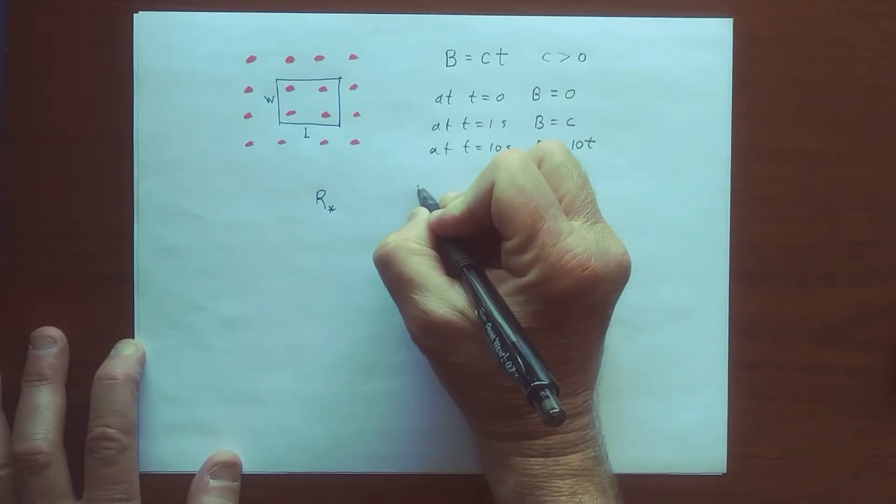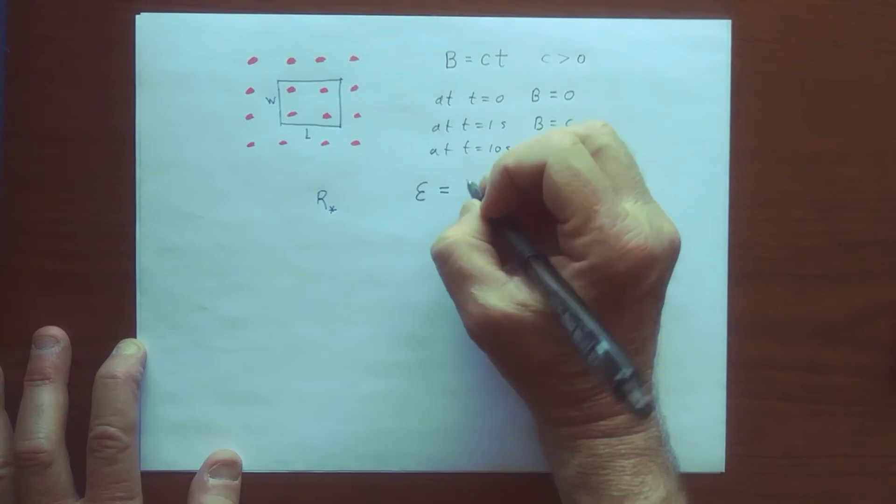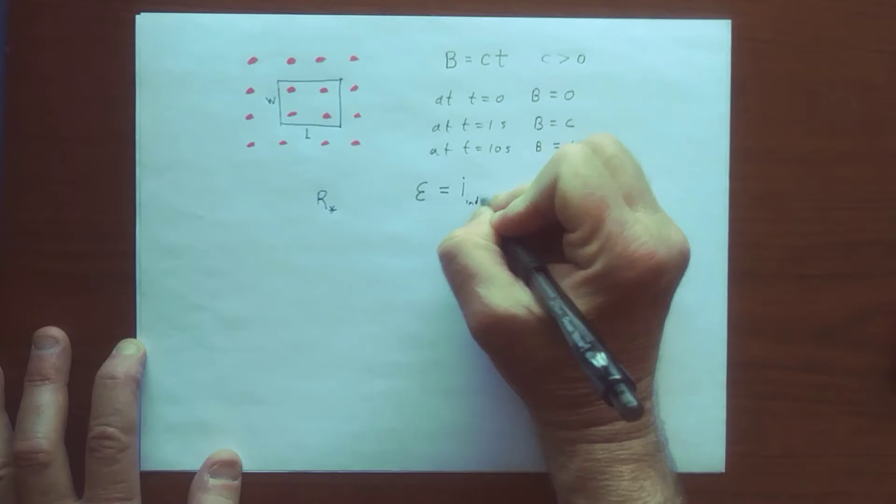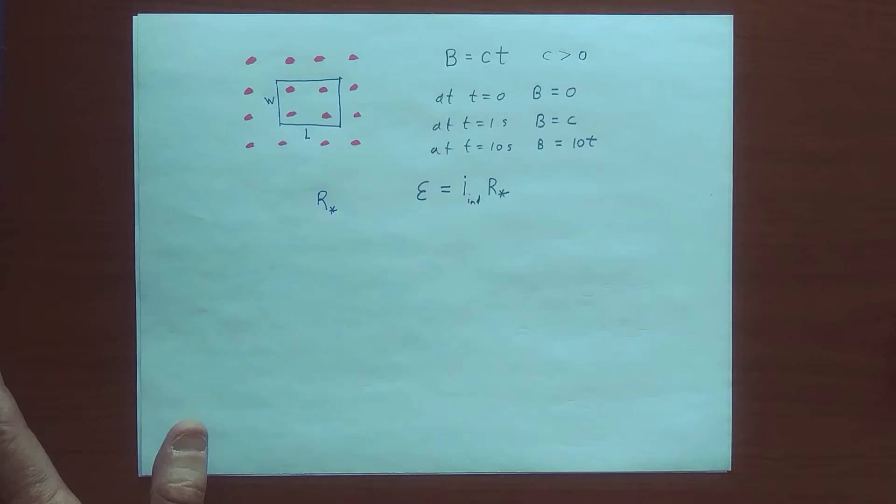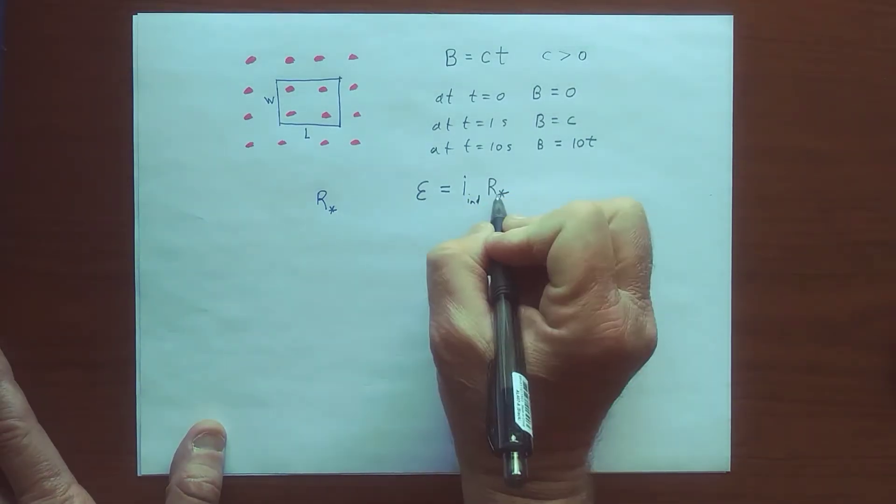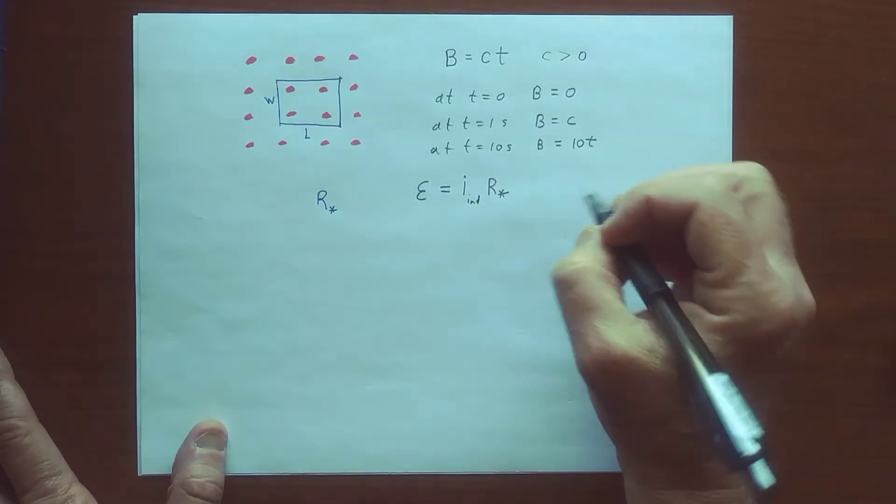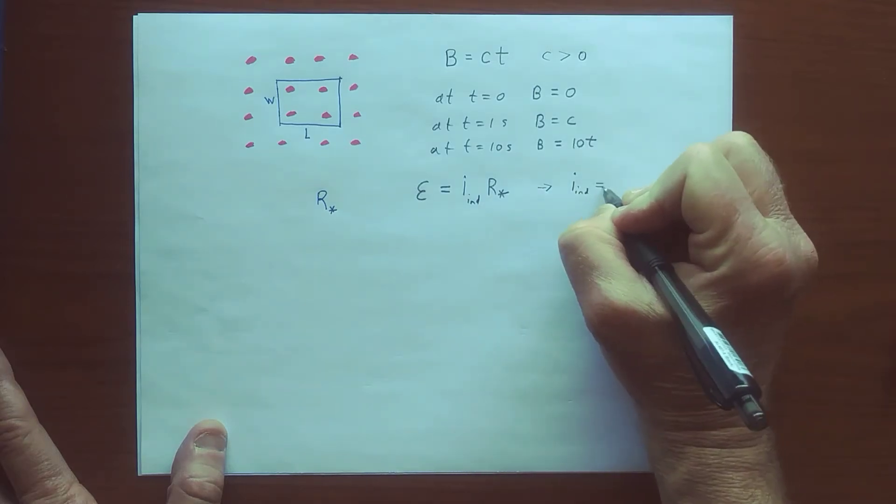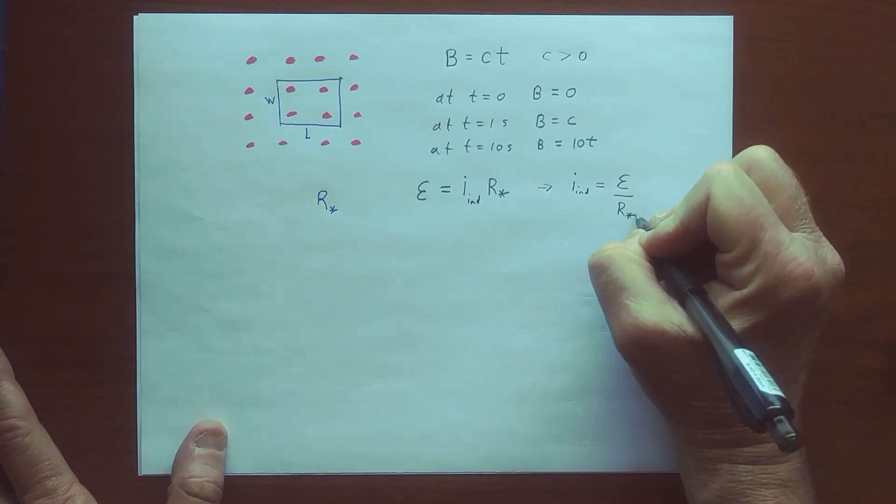We know that the EMF is, so the induced current is related, so let's say I induced times R star. That relationship holds. So we can evaluate I induced as the EMF divided by the known resistance. But we need to find the EMF. So from this, we can say that the magnitude of the induced current, which obeys Ohm's law, is the EMF over R star.